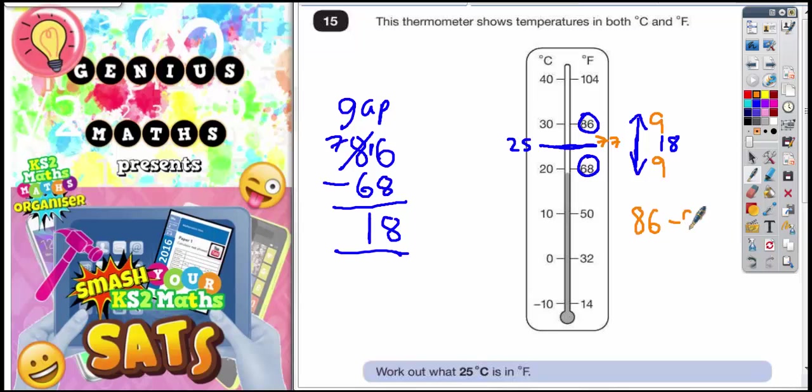So 86 subtract half of the gap is 77. But also 68 add half of the gap. Remember the gap is 18 so half of that is 9 is also 77.